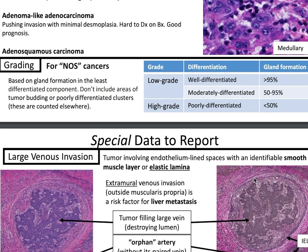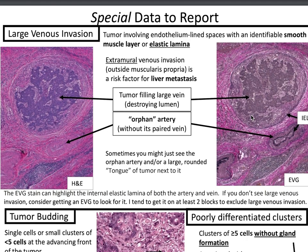Grading for NOS colorectal cancers is based on gland formation in the least differentiated component. Do not include areas of tumor budding or poorly differentiated clusters. Low grade includes well-differentiated and moderately differentiated. High grade is poorly differentiated. Well-differentiated is greater than 95% gland formation. Moderately differentiated is 50 to 95% gland formation. Poorly differentiated is less than 50% gland formation.